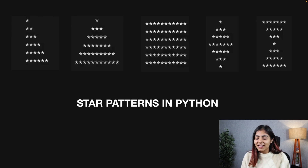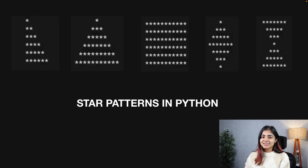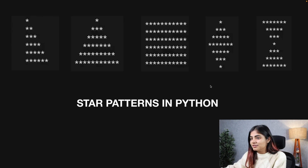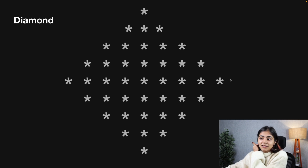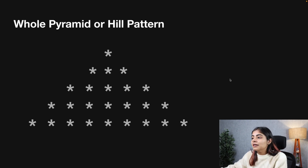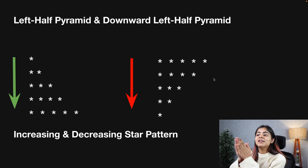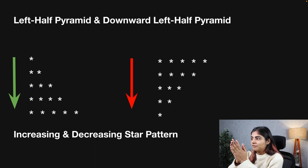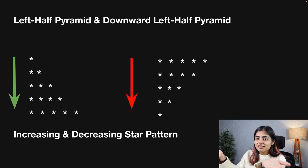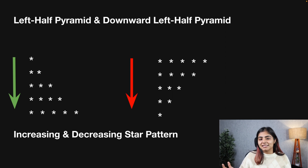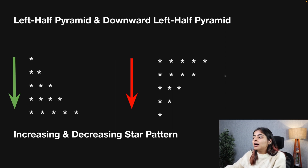Welcome back to our final video on creating star patterns in Python. For our final pattern we are creating a diamond pattern. In our previous video we covered how to create a hill or whole pyramid pattern, which we created using the combination of two fundamental patterns: the left half pyramid and the downward left half pyramid — we can now call them the increasing and decreasing star patterns.